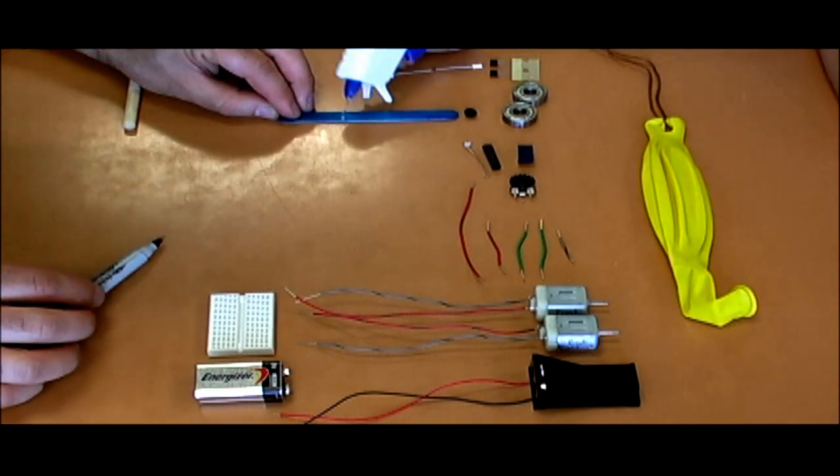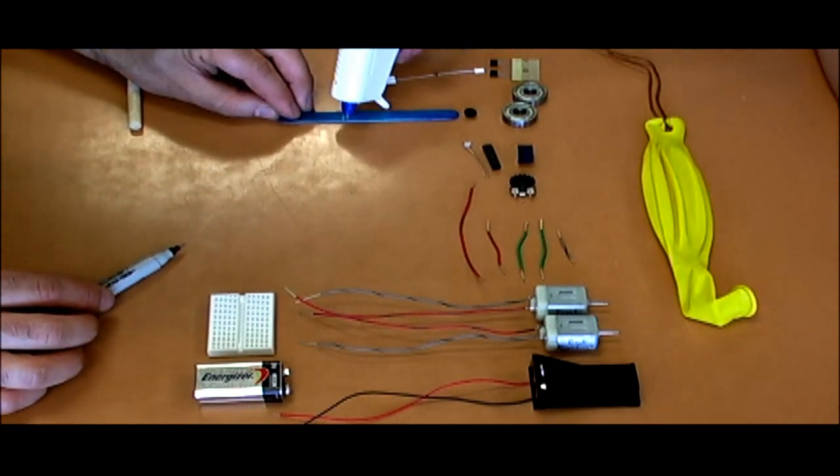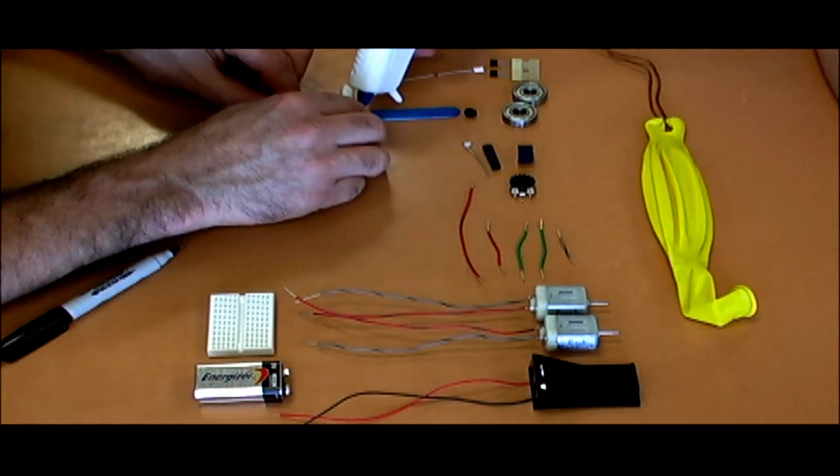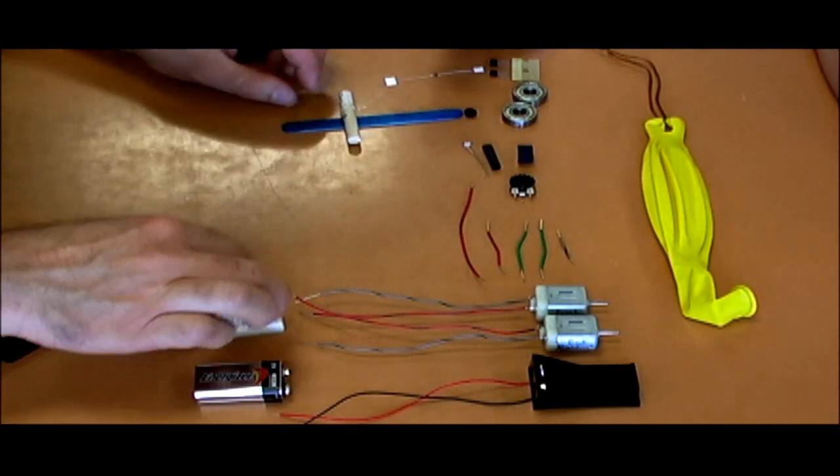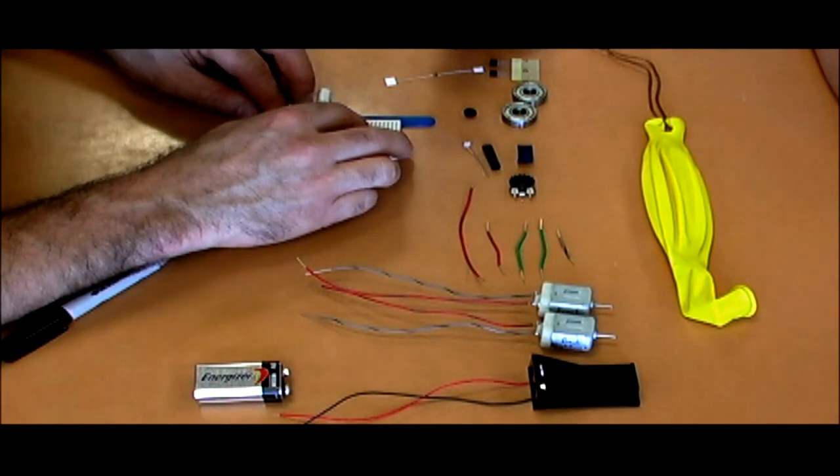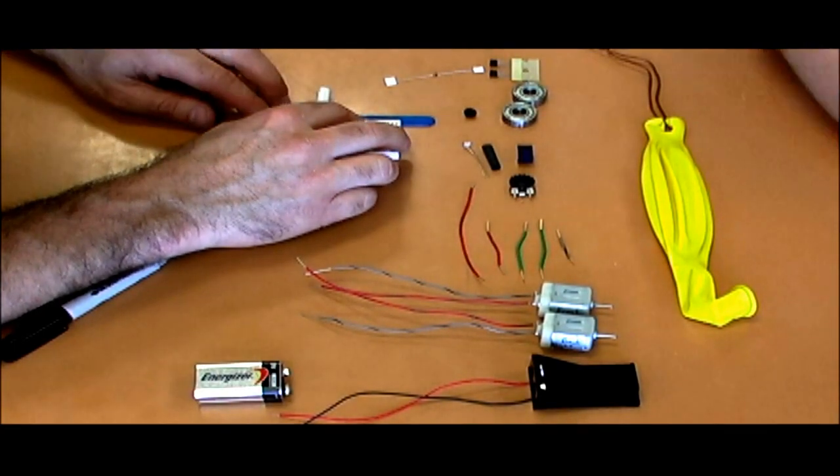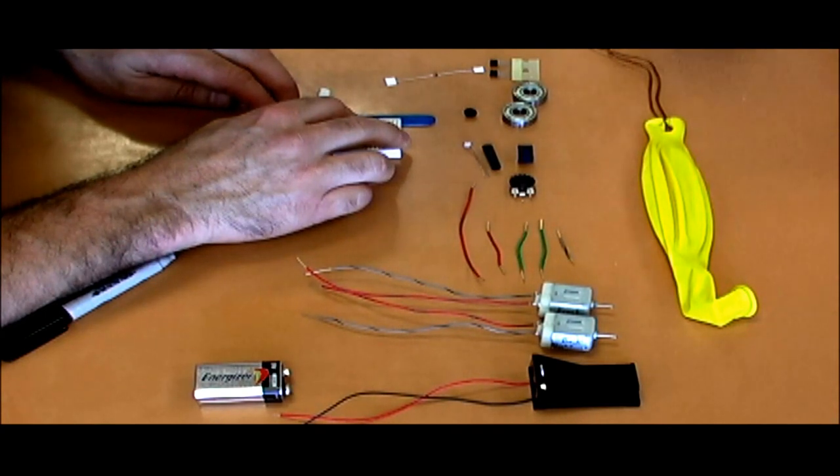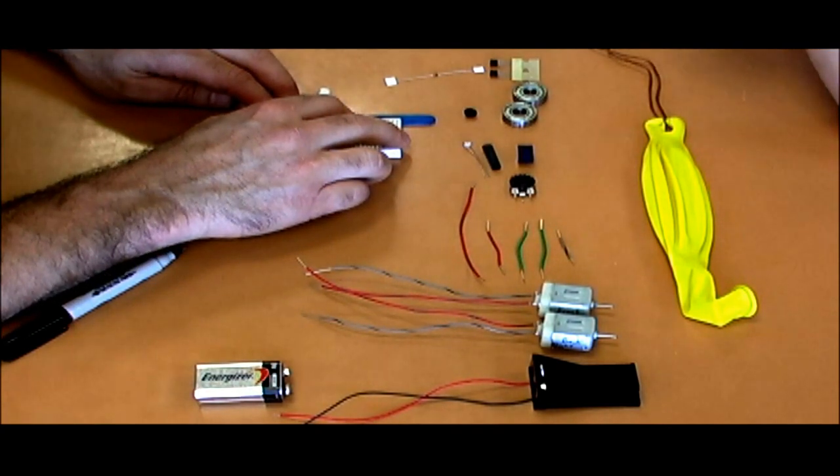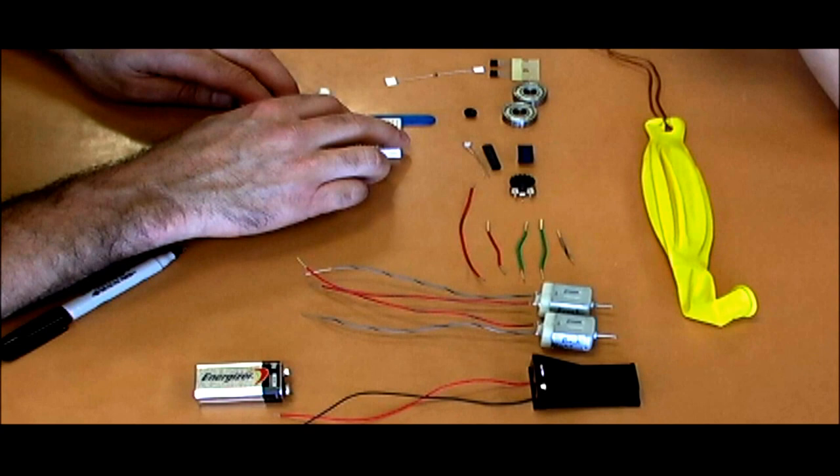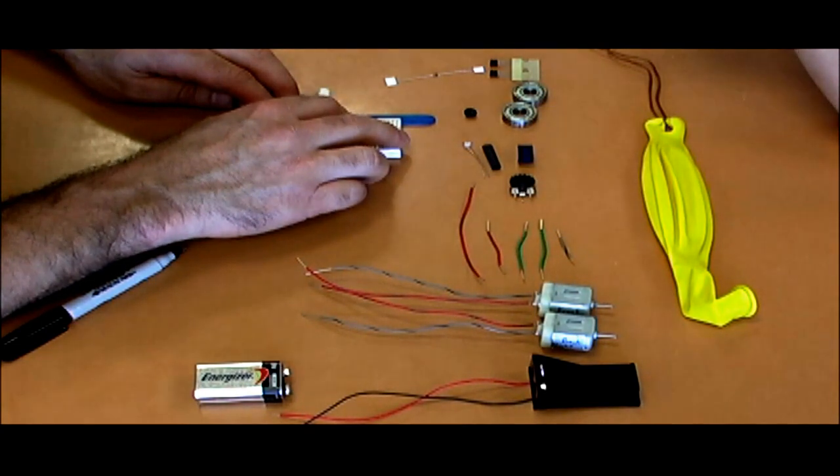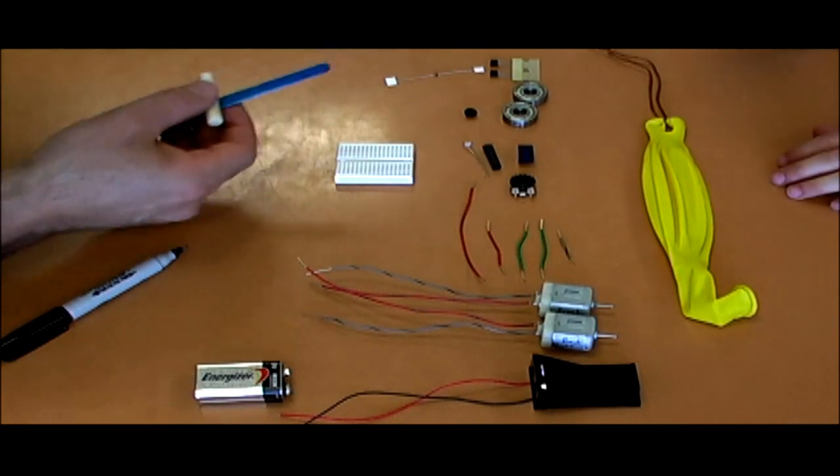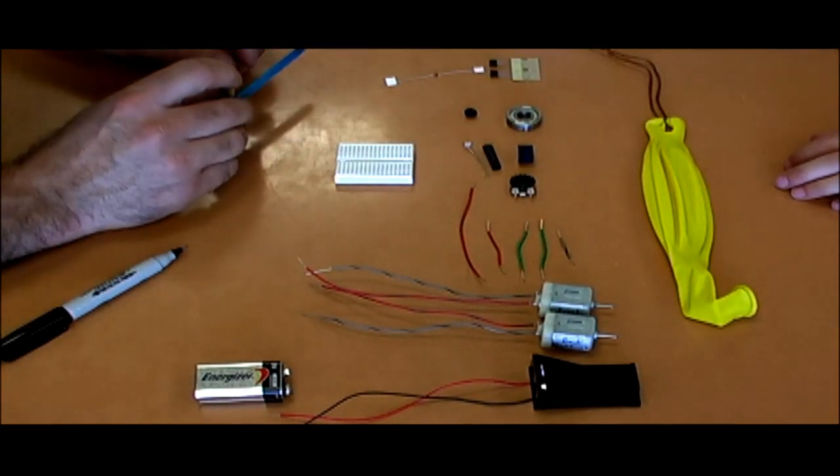Now we're going to hot glue, with a nice healthy glob of hot glue, the dowel to the craft stick. And what you want to do is make sure it's going to stay on there well. And what I'm doing here is I'm using the square edge of the solderless prototyping board to make sure that as the glue dries, it's holding the dowel at 90 degrees to the craft stick.